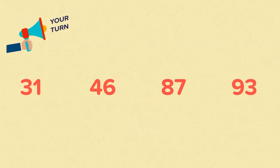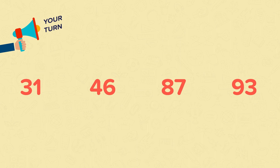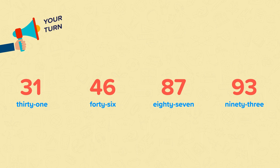Now it's your go. Have a go at writing these numbers in words. Pause the video and have a go. Well done if you got 31, 46, 87 and 93. Did you spell them all correctly? And did you remember the hyphens? Well done if you did.